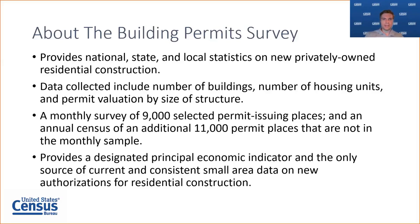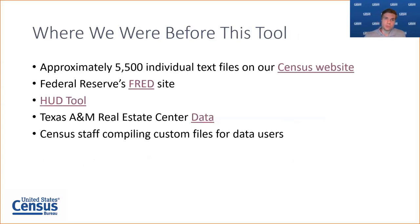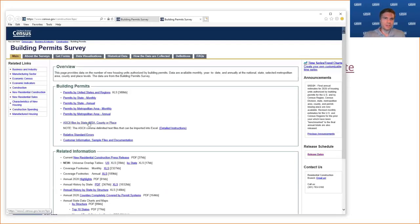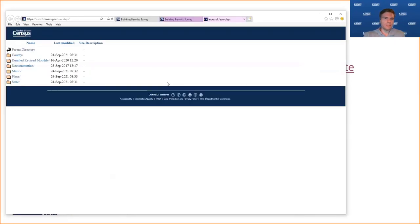The Building Permit Survey provides a designated principal economic indicator and it's the only source of current and consistent small area data on new authorizations for residential construction. One of the really neat things about the survey is that it goes down to a really granular level compared to some sales and other construction data that's only at the US and regional levels. Before this tool, we had approximately 5,500 individual text files on our census website.